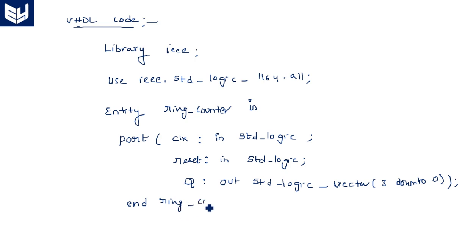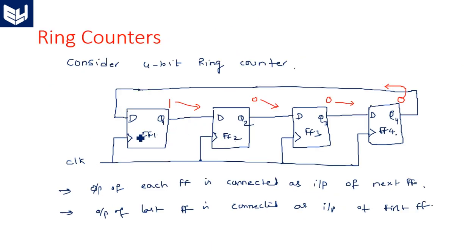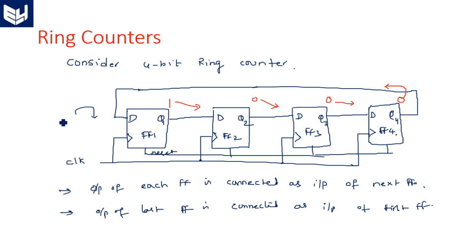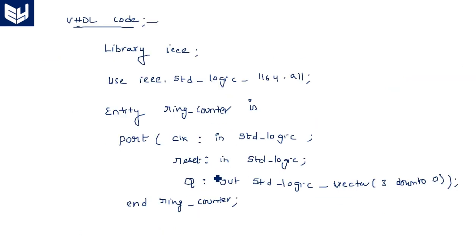We have taken the entity part with ports as inputs and outputs. The ring counter has a clock pulse and a reset pin, which is common to reset all flip-flops at a time. There is no external input port specified because each flip-flop's input depends on the output of the previous flip-flop. That's why we only have clock and reset inputs, plus a 4-bit output port.